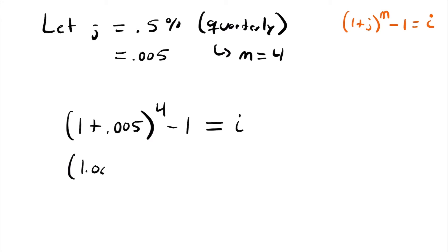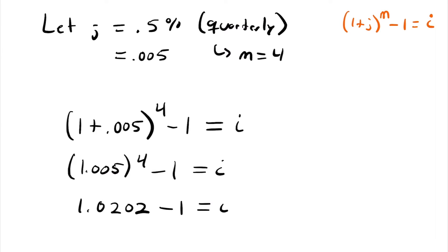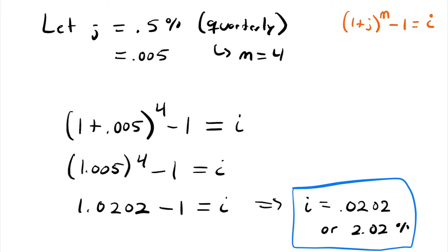Solving, we have 1.005 to the fourth power minus 1 equals I, which gives us approximately 1.0202 minus 1, so our interest rate equals 0.0202 or 2.02%. This is our annual effective interest rate when our quarterly rate is 0.5%. We call these equivalent rates of interest because they result in the same accumulated values at each year in time.